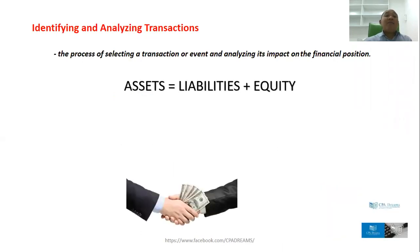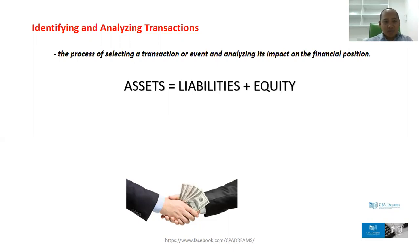Now, identifying and analyzing transactions is the first step in the accounting cycle. This is the process of selecting a transaction or event and analyzing its impact on the financial position — meaning on the assets equals liabilities plus equity equation. This is the time that you check if it's going to increase the assets, increase the liabilities, or decrease the equity.